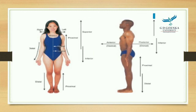You can see in this picture: superior, inferior, anterior (also called ventral), and posterior (also called dorsal), as well as distal and proximal.